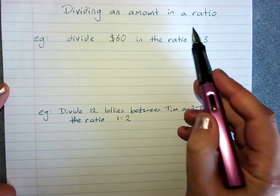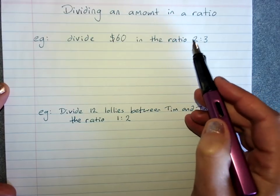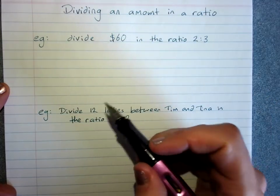This is like you've got two people - this person and this person. This person gets two parts and this person gets three parts, and we've got to share the sixty dollars like that.